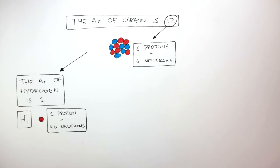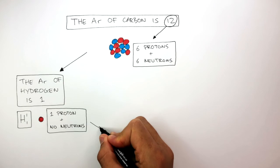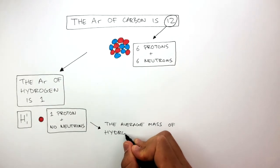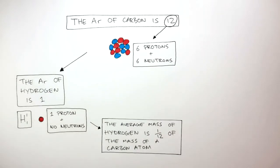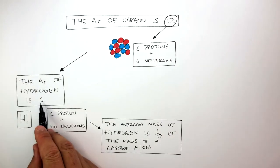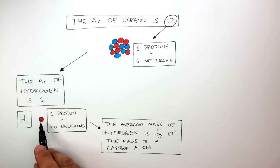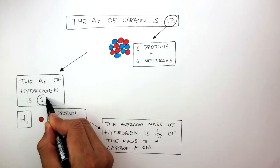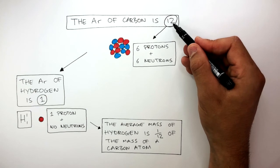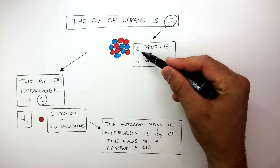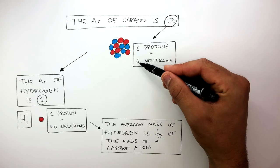So, because we can see hydrogen has a relative atomic mass of 1, and carbon has a relative atomic mass of 12, therefore, the average mass of hydrogen is 1 twelfth the mass of a carbon atom. This is because the AR of hydrogen is 1, because there is 1 proton, which causes the AR of hydrogen to be 1. Whereas, with carbon, the AR is 12. As we can see, there are 6 protons and 6 neutrons, so the AR is 12.